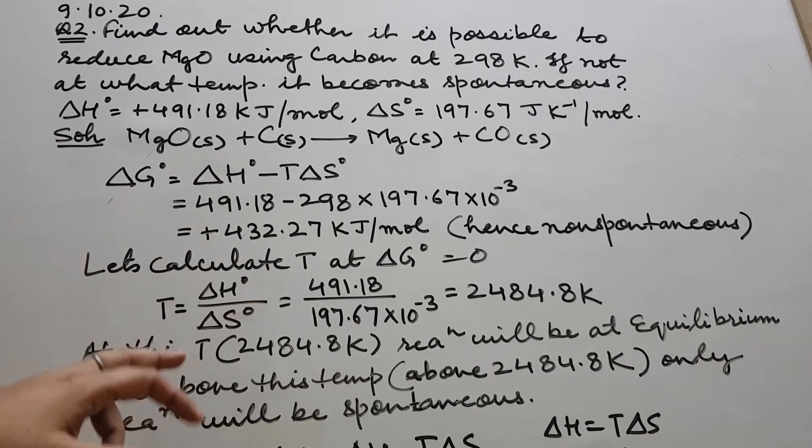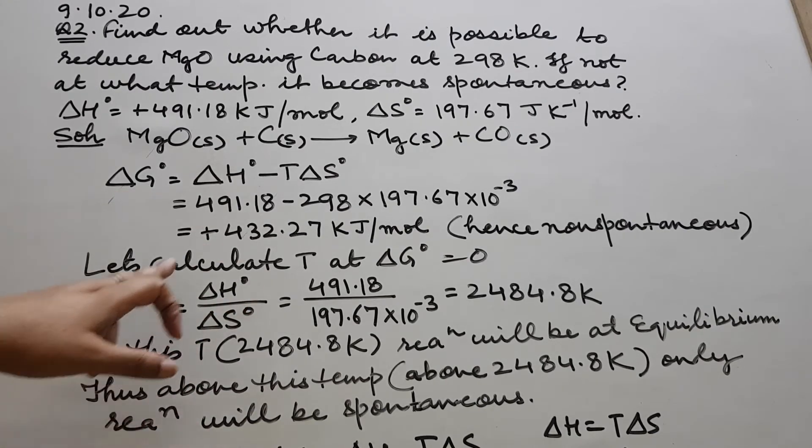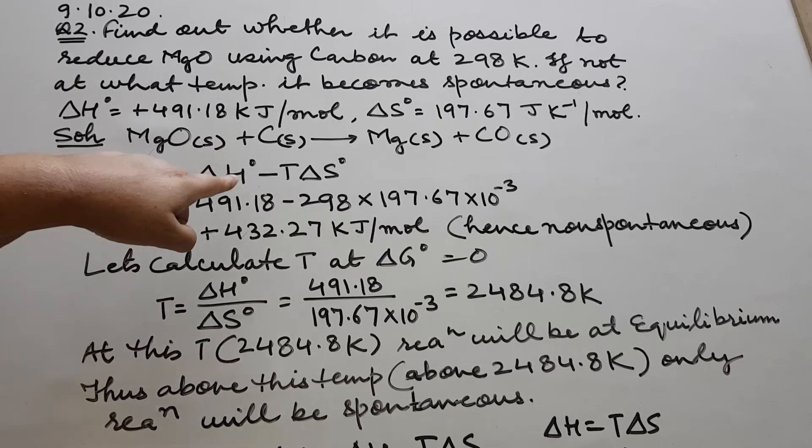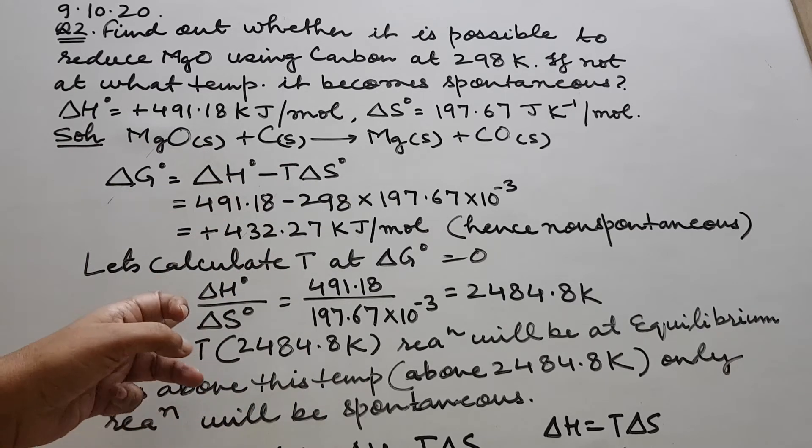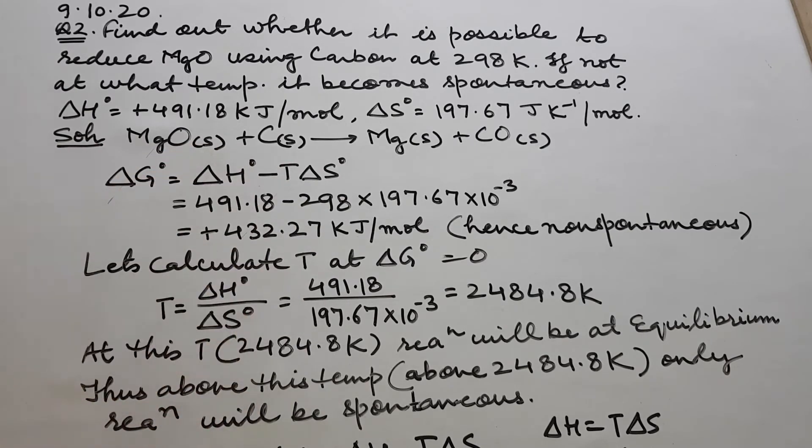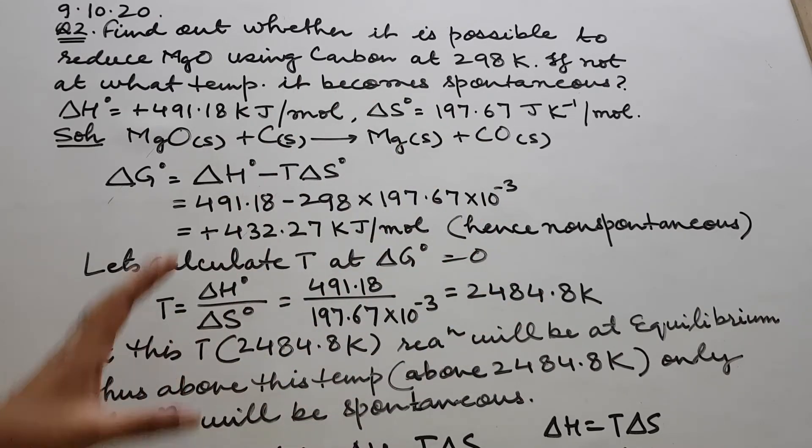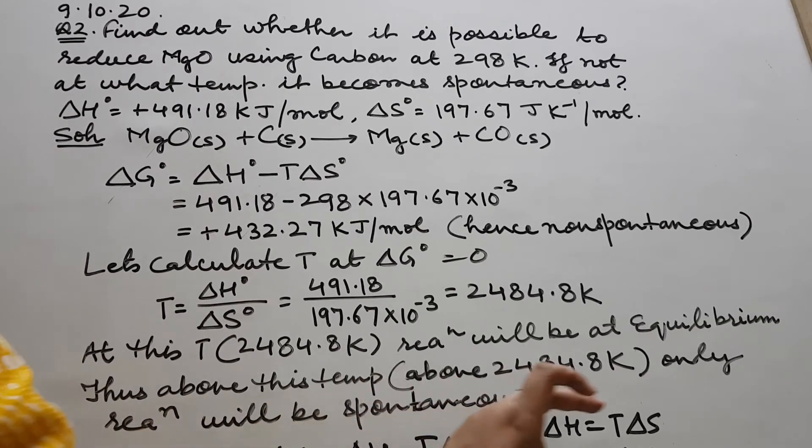Although if it is not visible, it's not the essential part because from here only you can see how I got the value of this formula: T equals delta H upon delta S. Because I am taking delta G equals zero, you can see delta H will be equal to T delta S, and from there I got this formula T equals delta H upon delta S. So I was trying to show you this also.